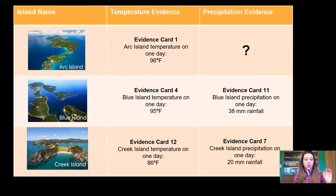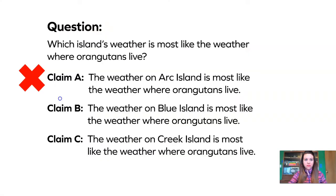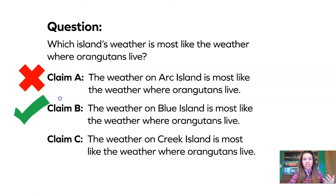Let's look back at our data table. We can compare Blue Island and Creek Island. When we compared their temperatures, we found that Blue Island had a really hot temperature of 95 degrees compared to Creek Island's temperature of 86 degrees, so Blue Island was the hottest. Looking at precipitation, Blue Island had 38 millimeters of rainfall and Creek Island only had 20 millimeters. So Blue Island was the hottest and the rainiest of the islands that we had data for. We already know it can't be Claim A, so let's look at Claim B and Claim C. Claim B says the weather on Blue Island is most like the weather where orangutans live — yeah, we have data and evidence to support that. Claim C, Creek Island, is not as hot or as rainy as Blue Island.